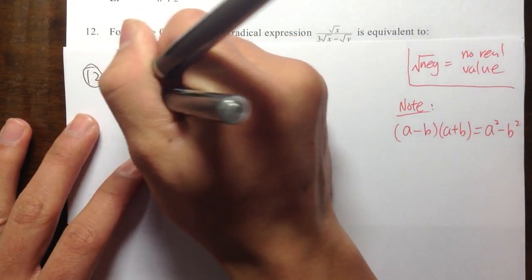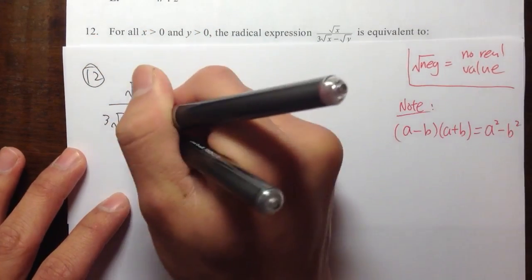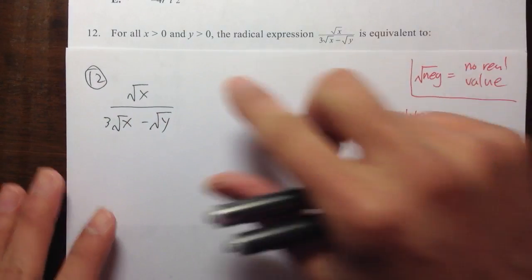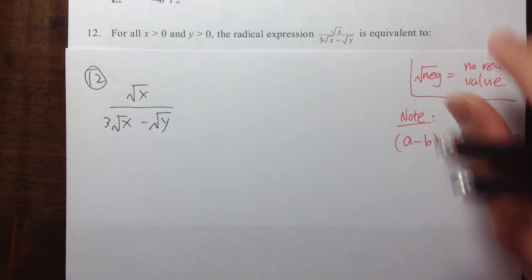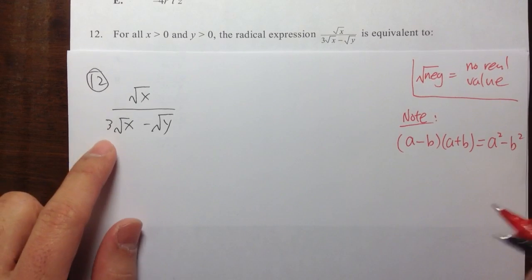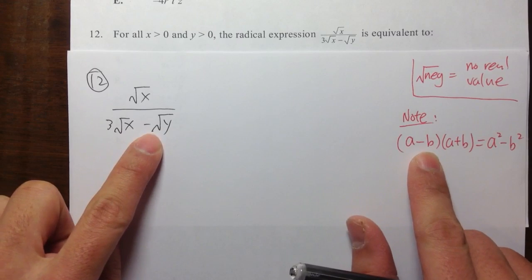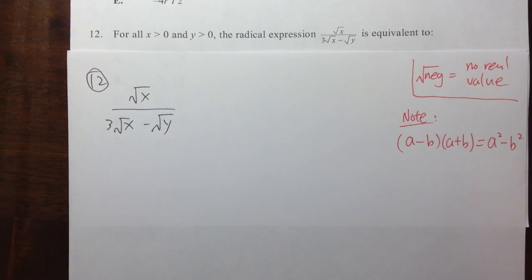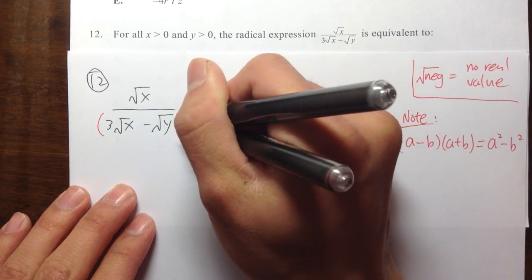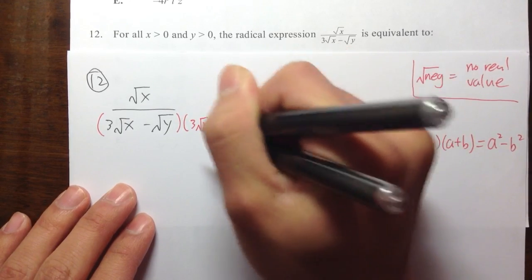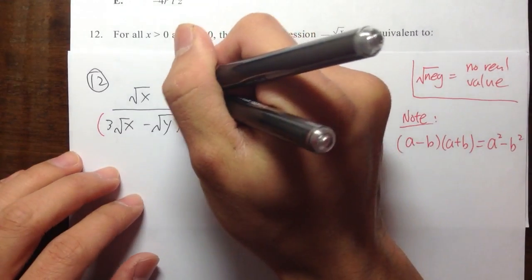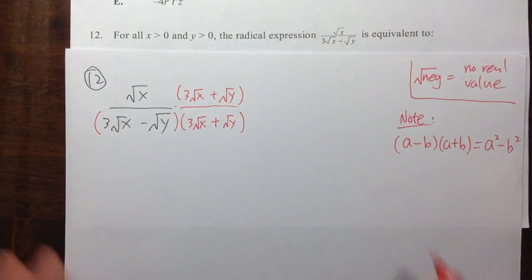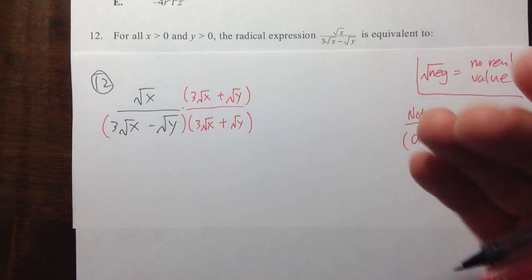For Question 12, I have square root of x over (3√x − √y). I cannot just remove the square root of y — I need to multiply the top and bottom by the same thing. That's how you deal with rational expressions. The denominator is like (a − b), so I'll multiply by (3√x + √y) on both top and bottom, changing the middle sign from negative to positive.